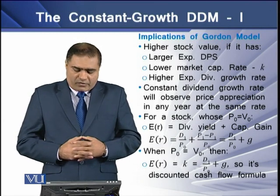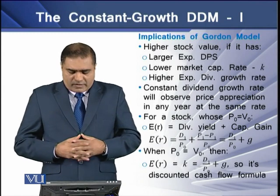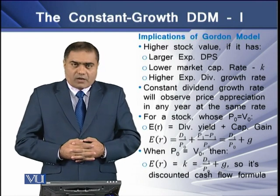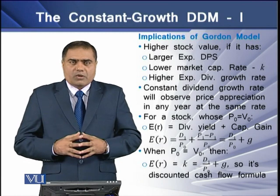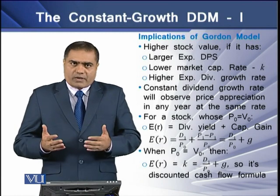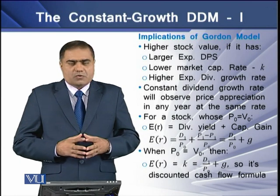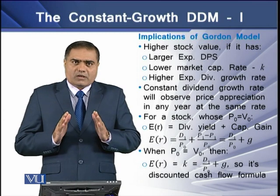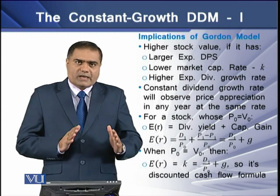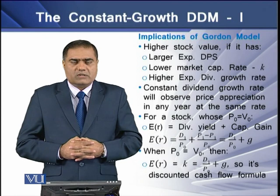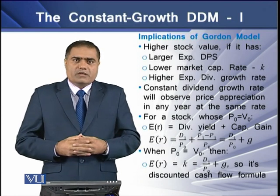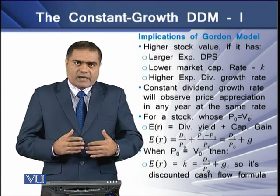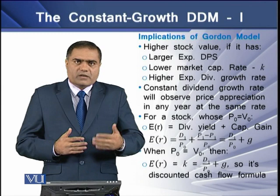When P0 is equal to V0, the expected return will equal K, the capitalization rate, and this equals D1 over P0 plus G. We can also say that this particular formula is considered a discounted cash flow formula, because in this formula the variable K acts as the factor that discounts the cash flows of yearly dividends.